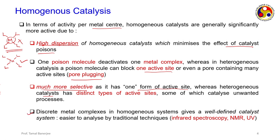Discrete metal complexes in homogeneous systems keep a well-defined catalyst system. If the structure is well-defined and its distribution is uniform, then its characterization is also easy. It can be easily characterized or analyzed by traditional techniques such as IR, NMR, or UV. You can easily find out whether the catalyst particle is present, because they are uniform with a sharp identification - the fingerprint is very easy to identify.